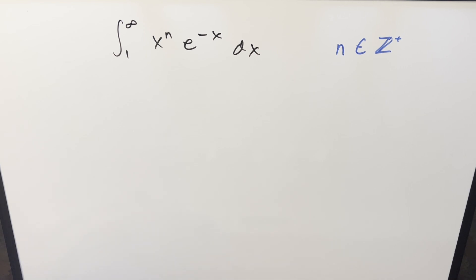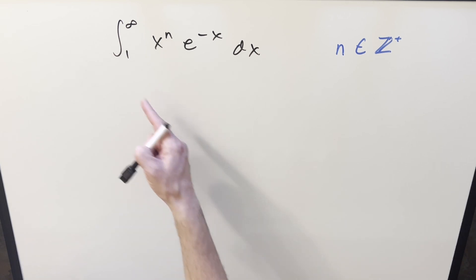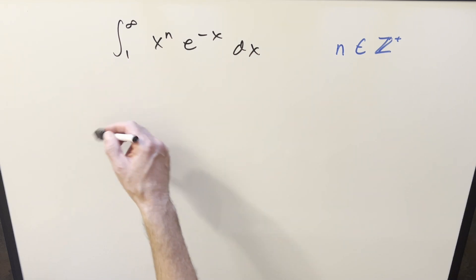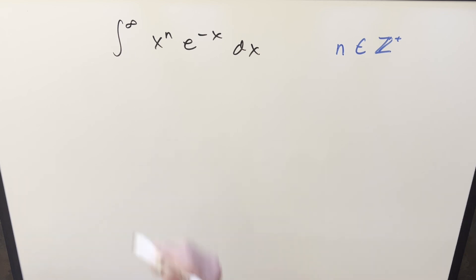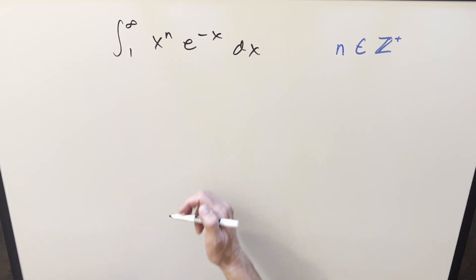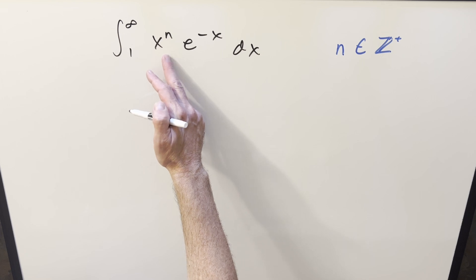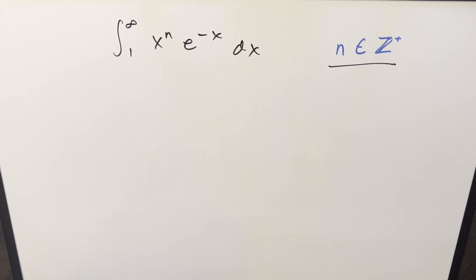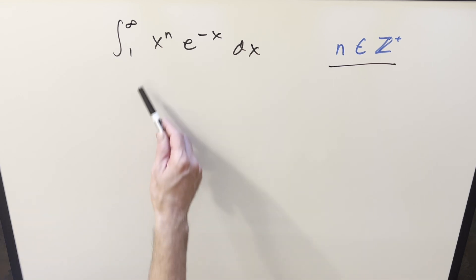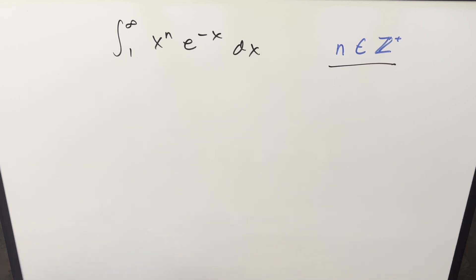What we have here today is an integral that looks a lot like the gamma function, but there's just one problem. The lower bound on the gamma function would normally be zero. Typically if we mess with the bounds or any part of the gamma function, it's going to make it much more messy and difficult — we might have to estimate an answer. But in this case, when our lower bound is one and the exponent on the x is going to be a positive integer value, we can actually get a pretty nice formula. Initially I was going to do this with x to the 2024 or x cubed, but I think the general formula is going to be more interesting.